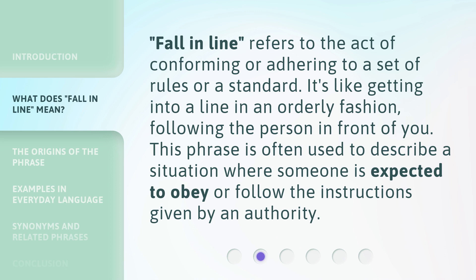'Fall in line' refers to the act of conforming or adhering to a set of rules or a standard. It's like getting into a line in an orderly fashion, following the person in front of you. This phrase is often used to describe a situation where someone is expected to obey or follow the instructions given by an authority.